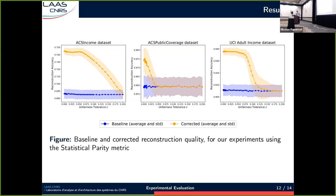Here are some results for the statistical parity metric across the different datasets. On the y-axis we have the reconstruction accuracy — the proportion of training set sensitive attributes correctly guessed by the attack. On the x-axis we have the unfairness tolerance value, where tighter values mean tighter fairness constraints. In blue we can see the baseline adversary reconstruction, and in orange the corrected version. Our proposed reconstruction corrector component is always able to bring some improvement over the baseline adversary, and the tighter the fairness constraints, the more important the improvements brought by the reconstruction correction.